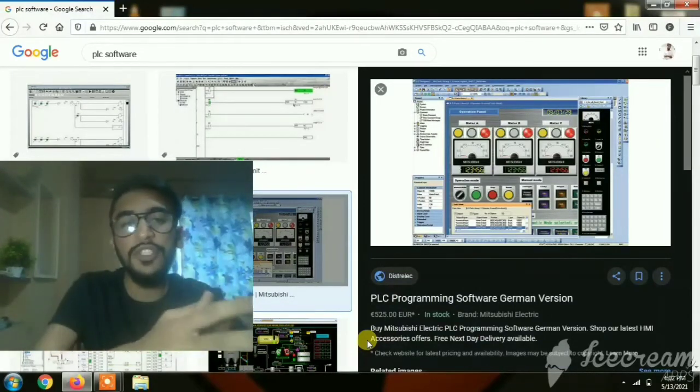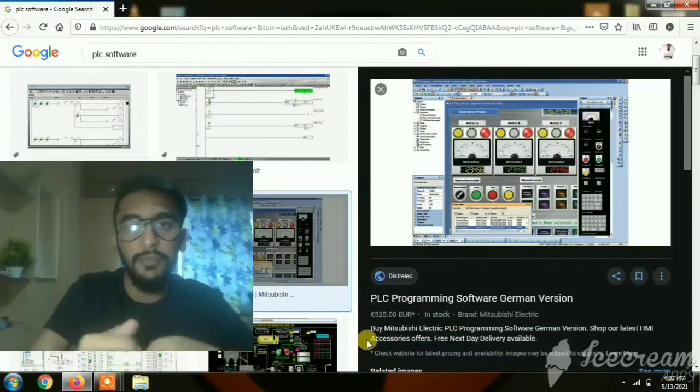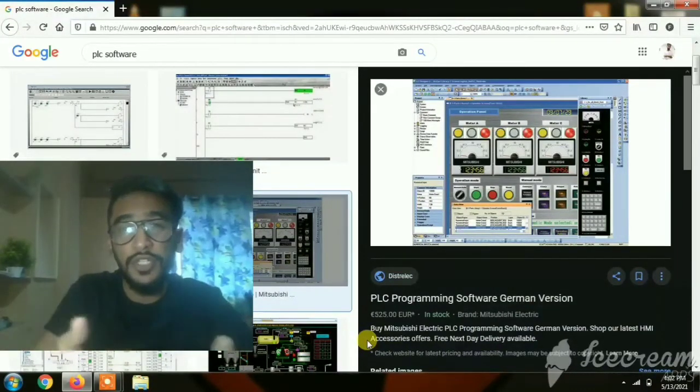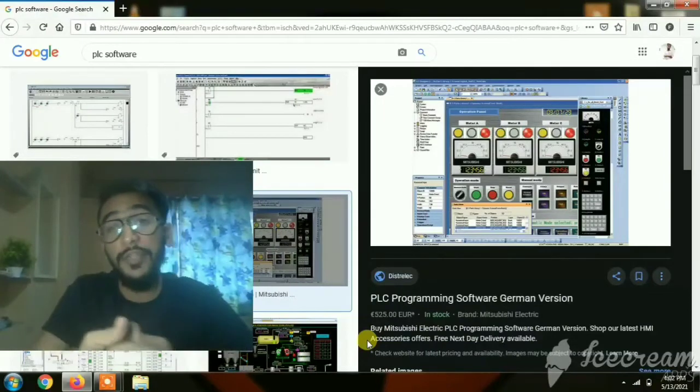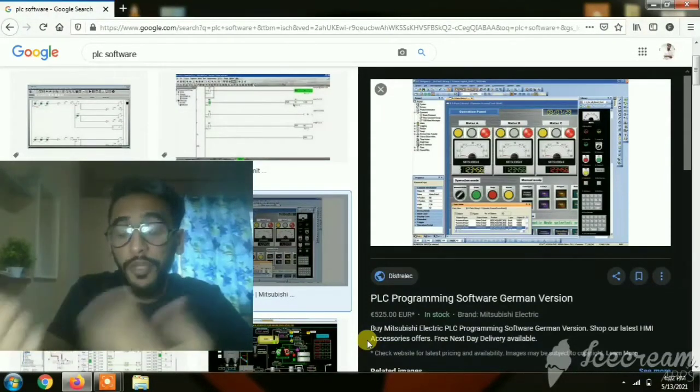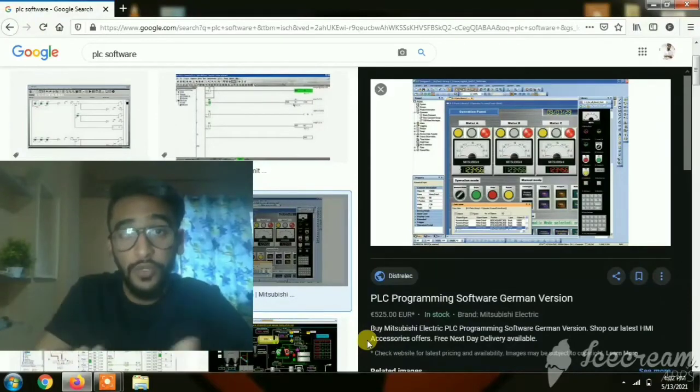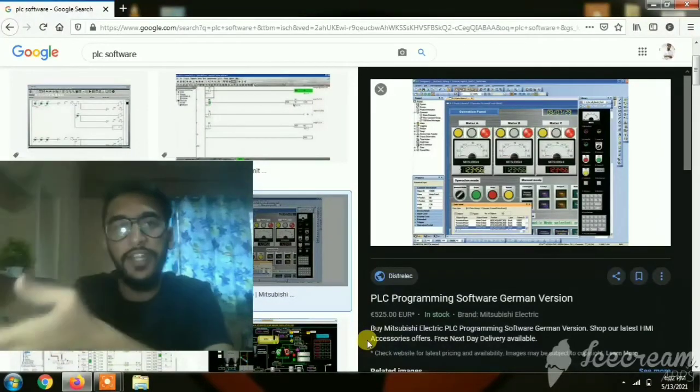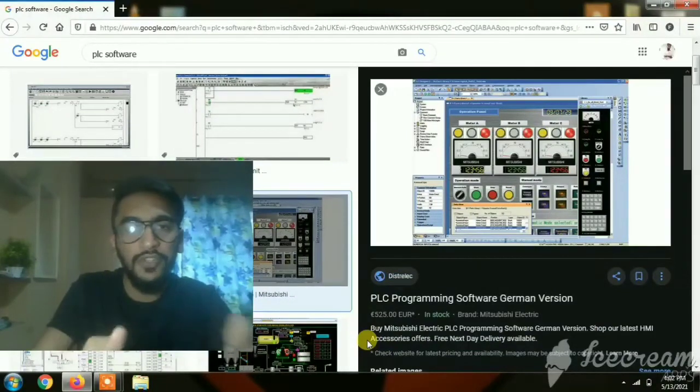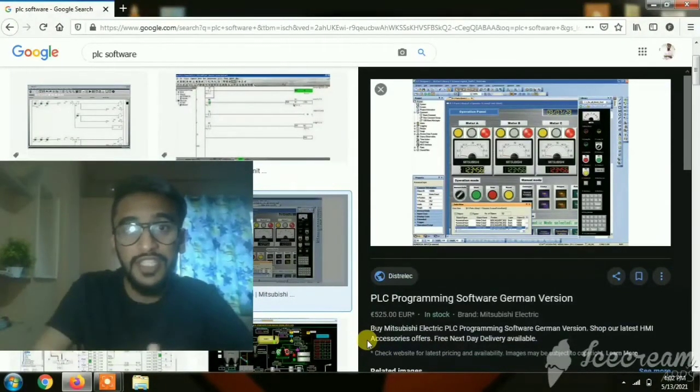When we place the bits on the branches or rungs, we place the input bits on the left hand side and output bits on the right hand side. The trigger bits of the motors, lamps, and pumps that we control using PLC would be placed on the right hand side, and the switch, toggle switch, and sensor pins would be placed on the left hand side. This is how the PLC ladder diagram works.